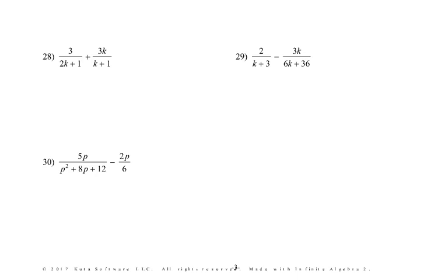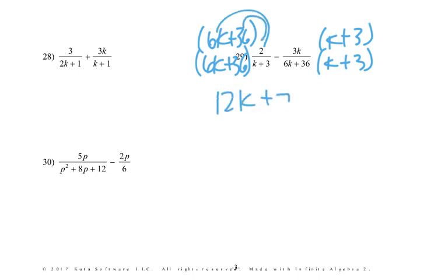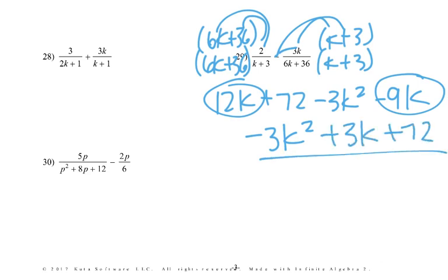Number 29: we could pull a 6 out to get 6 times k plus 6, but that doesn't really help. So multiply by k plus 3 on the right side, giving 6k plus 36 on the left side. We'd end up with 2 times 6 = 12k, 2 times 36 = 72. Then negative 3k times k is negative 3k squared, and negative 3k times negative 3 is negative 9k. Those combine, leaving negative 3k squared plus 3k plus 72 over 6k plus 36 times k plus 3. We call that one good.